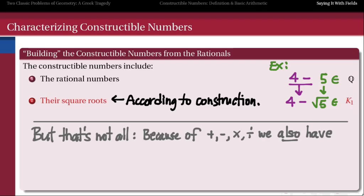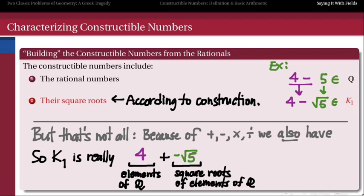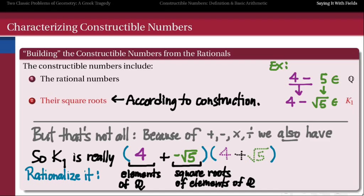Why? Because 4 is constructible, and √5 is constructible, and I know I can subtract constructible numbers. So 4 minus √5 is also something I should be able to construct. The elements that belong to this first level K1 are not just pure square roots, but potentially sums of square roots of rational numbers with rational numbers themselves — for example, 4 plus negative √5. One of the ways we can relate these back to the rational number field is to rationalize. If I want to make 4 plus negative √5 back into something rational, I multiply it by its conjugate — we take the square root part that's not rational and flip the sign. After doing that, difference of two squares shows that the product equals 9, which is rational. So it takes just one step to rationalize a number in K1 and get it back into the rational field Q.